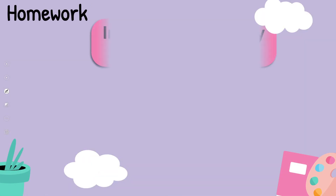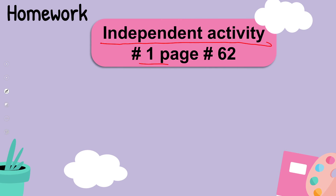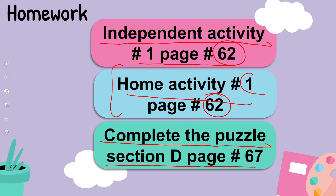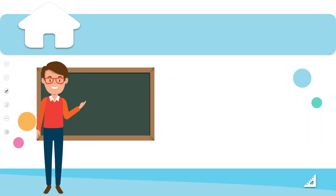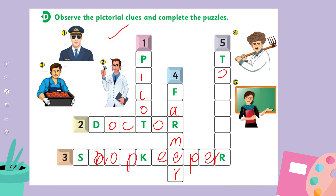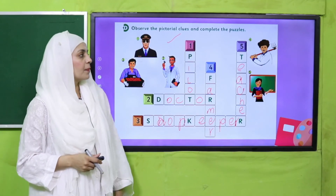For homework: do independent activity number one given on page 62, and home activity number one on page 62 — collect pictures and paste them in your notebook, also write the name of the profession. Additionally, complete the puzzle section D given on page number 67. In the puzzle: number one is a pilot, number two is a doctor, number four is a farmer, then shopkeeper, and teacher. That is how you will complete the puzzle.